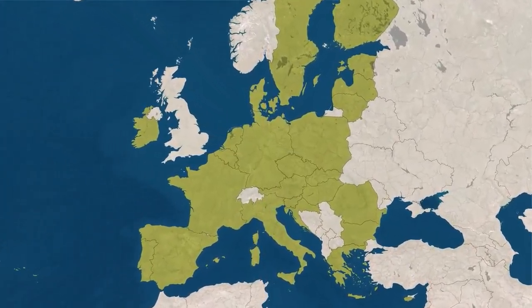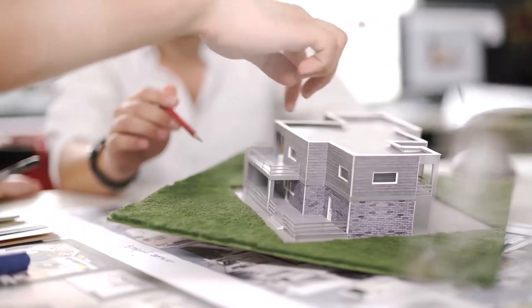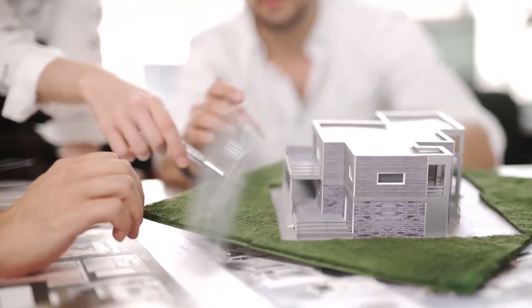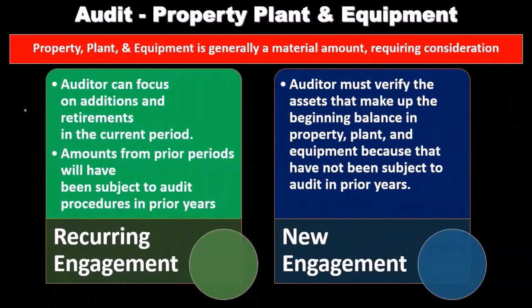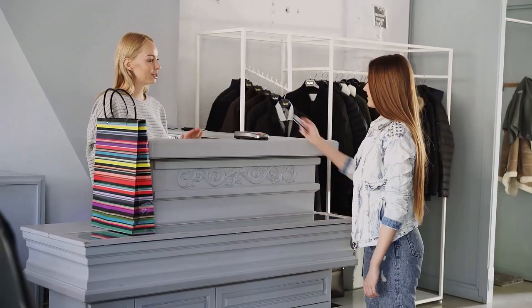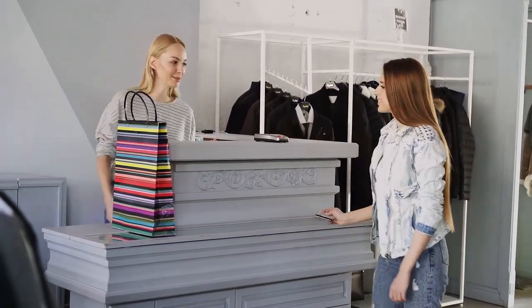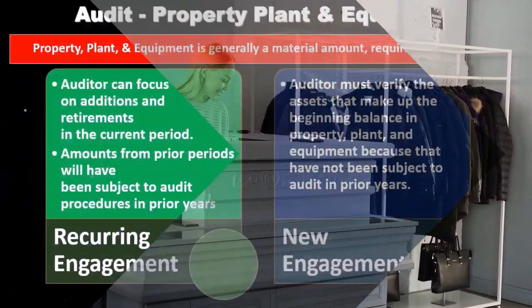However, the number of transactions related to property, plant, and equipment in the current year is somewhat limited. We're not buying property, plant, and equipment every day as with other types of items — it's not a daily process. Therefore, we can audit many, maybe all, of the transactions related to purchases and disposals much more easily than with other account types where auditing all transactions is impossible.